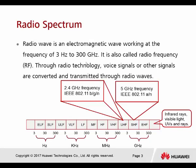This is the radio spectrum, also called the radio frequency, starting from 3Hz up to 300GHz. For Wi-Fi, we use the frequency at the UHF level — UHF stands for Ultra High Frequency — and also within the Super High Frequency area, which is the 5GHz band.